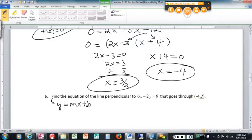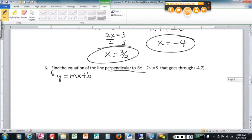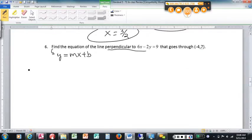In this case, I've got a couple of bits of information. I want it to be perpendicular to this line. What does that mean? Perpendicular means it has to have the opposite reciprocal of the slope. Now, the question is, starting off with anyway, what is the slope of 6x minus 2y equals 9?